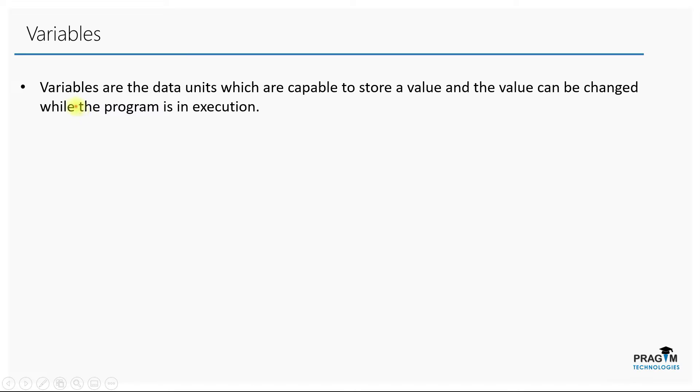So what are variables? Variables are data units which are capable of storing a value, and the values in these variables can be changed while the program is in execution.